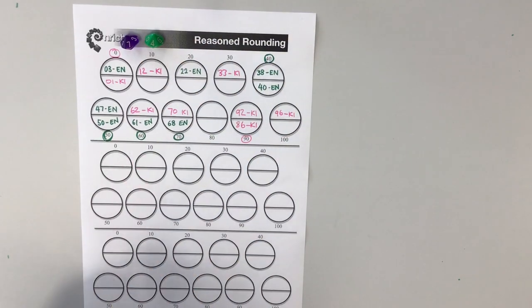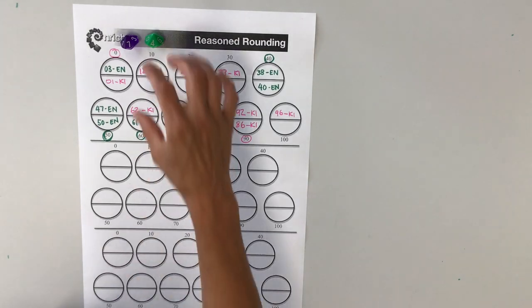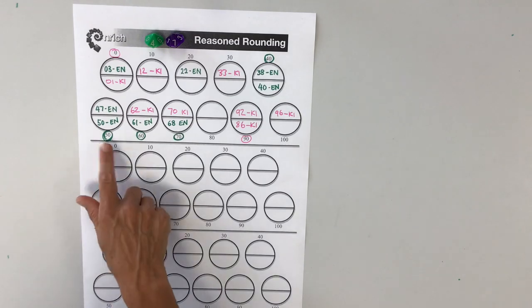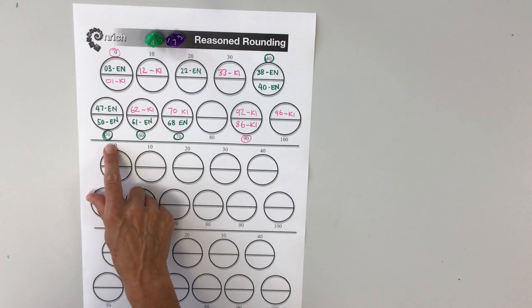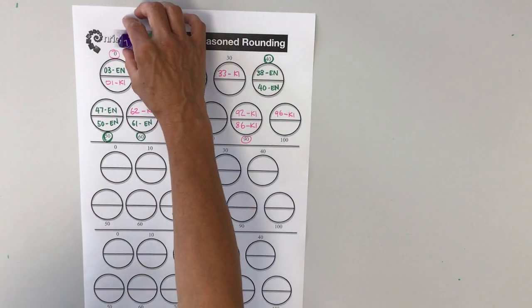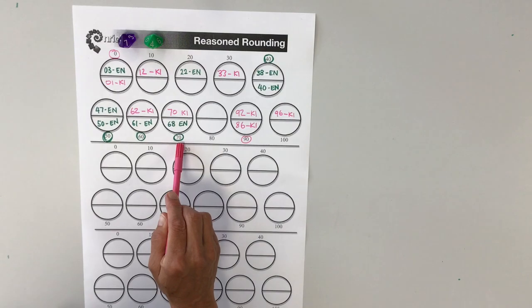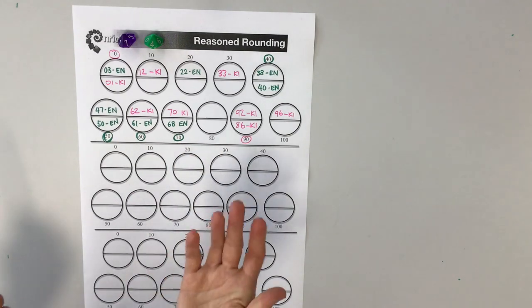So I've just rolled a 7 and a 4, so it could be 74 or 47. So if I look at 47, unfortunately, Miss Norman has already taken that, so I can't put it there. So I'll have to use it as a 74. 74 would round down to 70, but unfortunately she's also got that circle as well. So I miss a go.